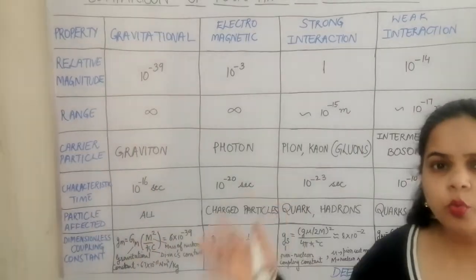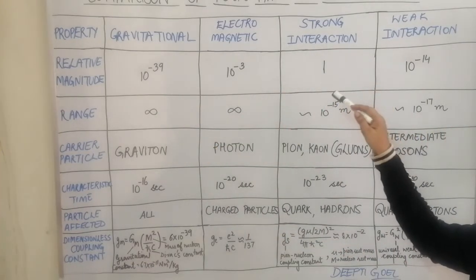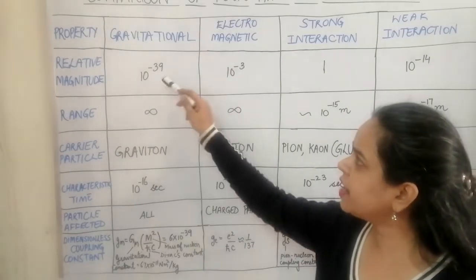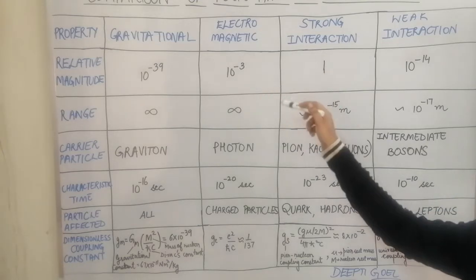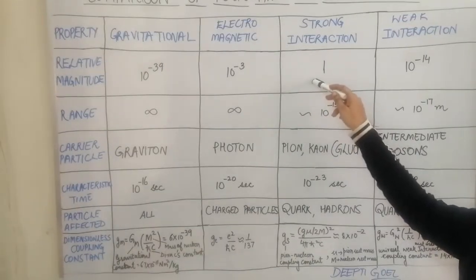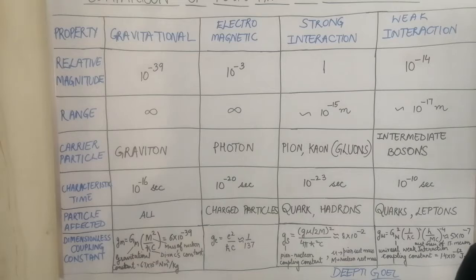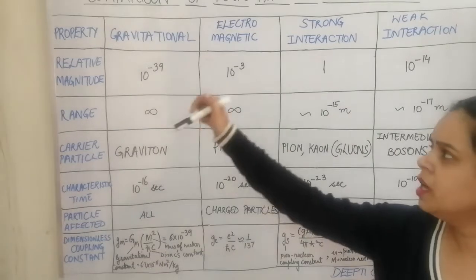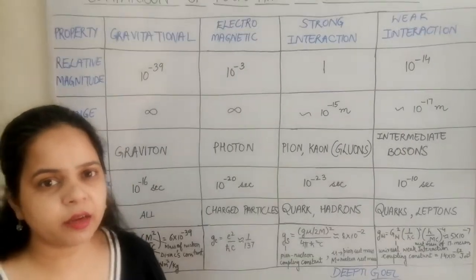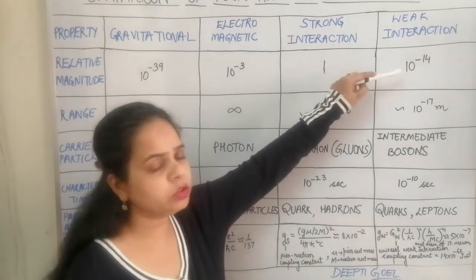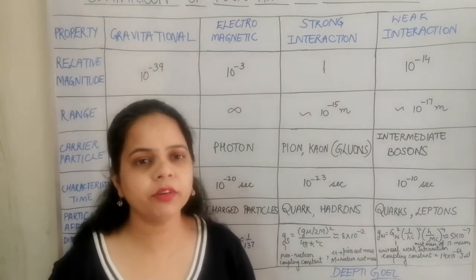Regarding the relative magnitude with respect to the strong interaction: if we take the strong interaction as having a magnitude of 1, the gravitational forces are the weakest, with a magnitude of 10 raised to the power minus 39 — the weakest but attractive. The electromagnetic forces are comparatively stronger than gravity but weaker than the strong interaction, with a relative magnitude of 10 raised to power minus 3. The weak interaction has a relative magnitude of 10 raised to power minus 40.